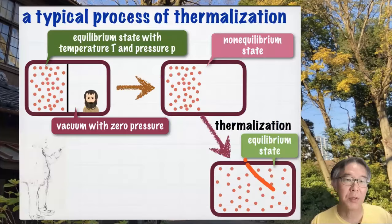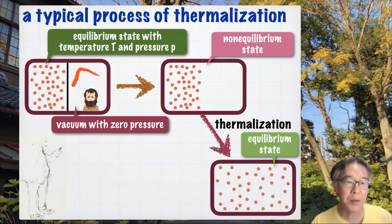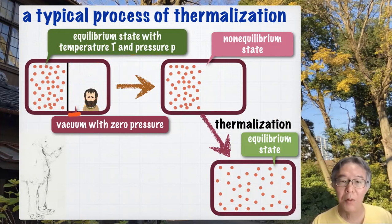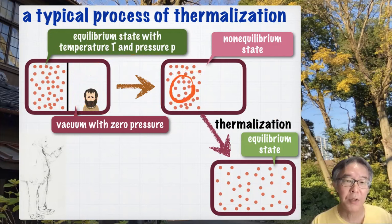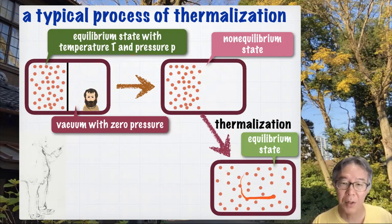So what do I mean by thermalization? Here is a typical example. Here is a box, and in the left half of the box you have a gas in equilibrium at temperature T and pressure P, and the right half of the box is a vacuum. Then you remove the wall, and you get this drastically non-equilibrium state in which the finite pressure part and the zero pressure part coexist. Of course this is unstable, the gas quickly expands and you reach a new equilibrium state.